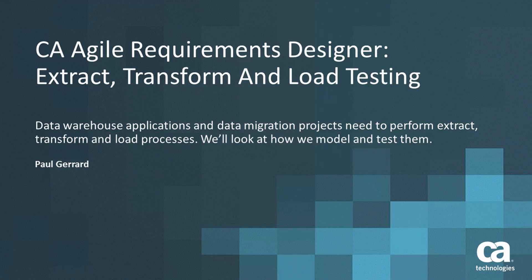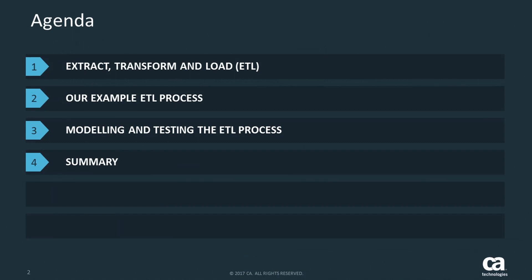Data Warehouse applications exist to provide improved management information and reporting on potentially disparate systems. In order to create the content of data warehouse applications, we use processes typically called extract, transform, and load processes. We'll look at how we model and test these ETL processes in this video, explaining what ETL processes are with an example, a demo of ARD modeling and testing, and a summary at the end.